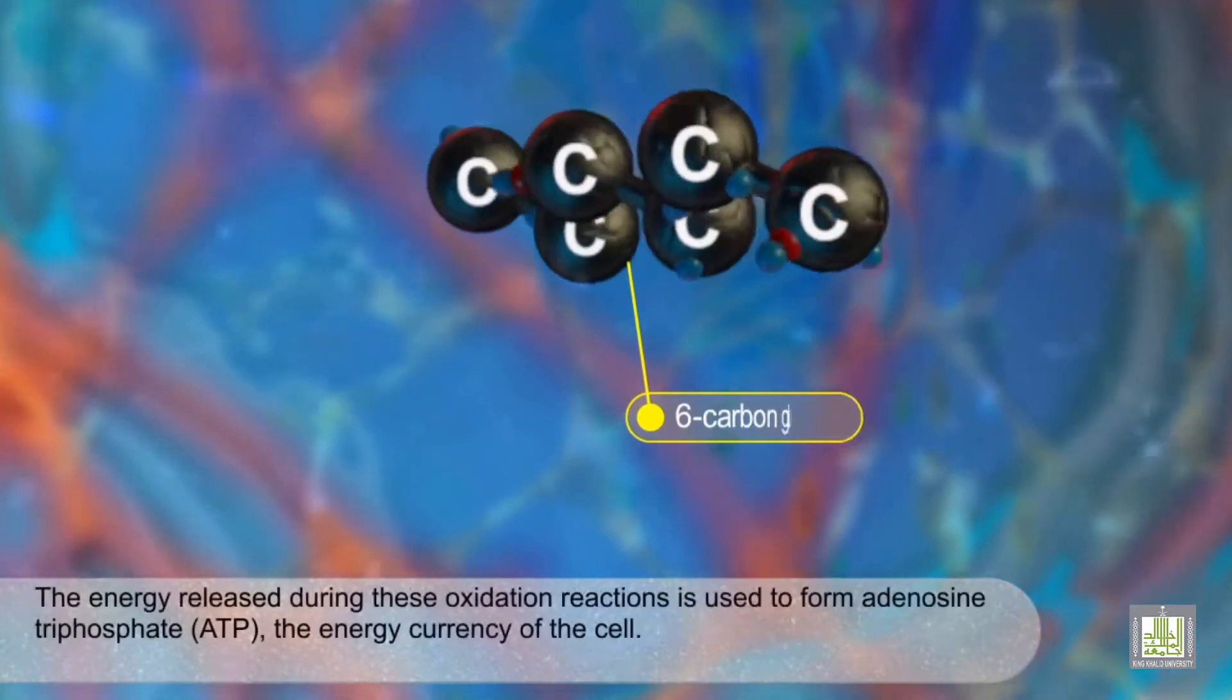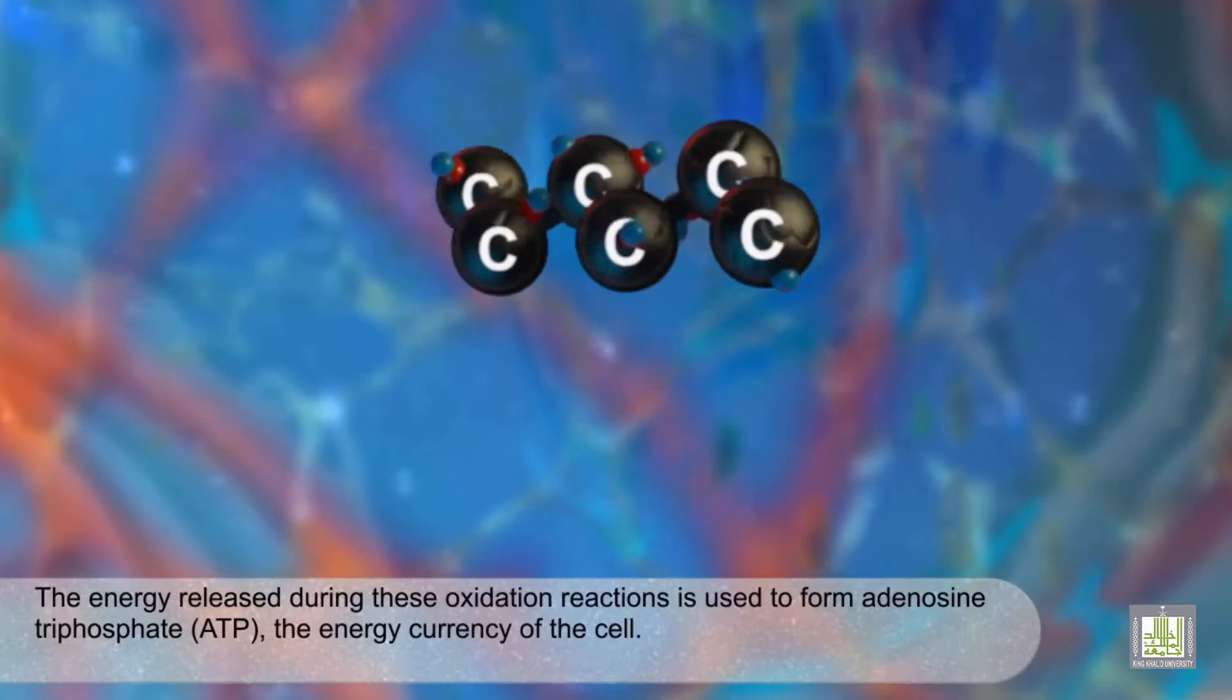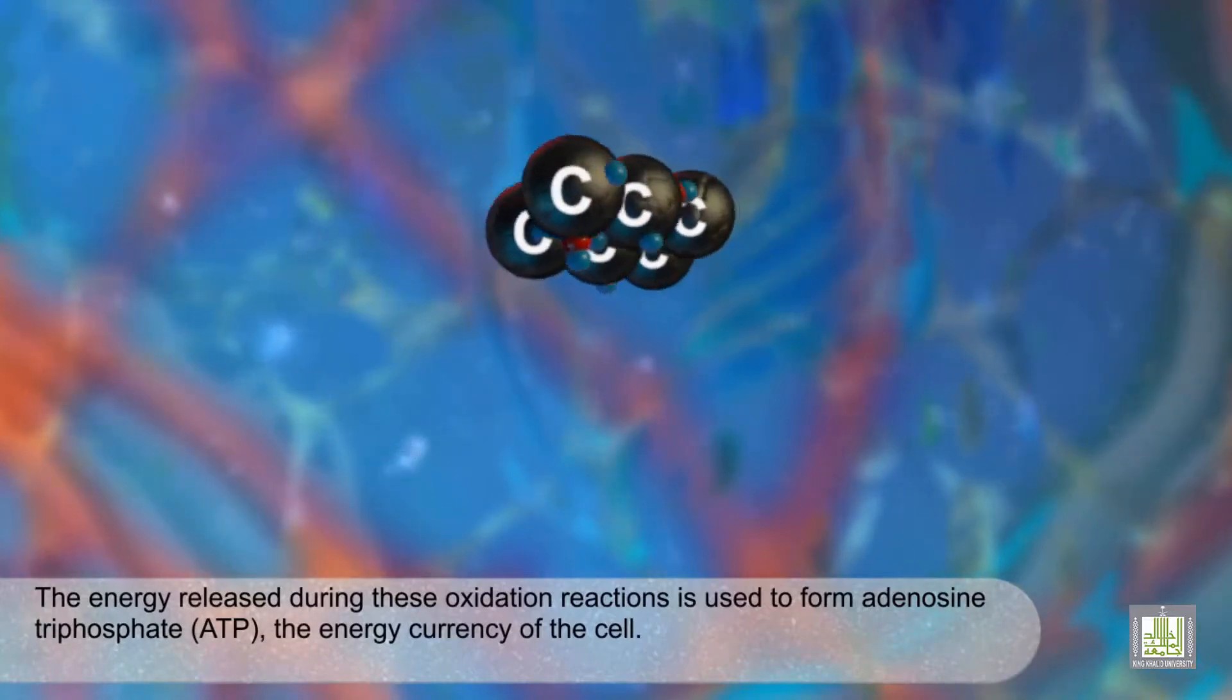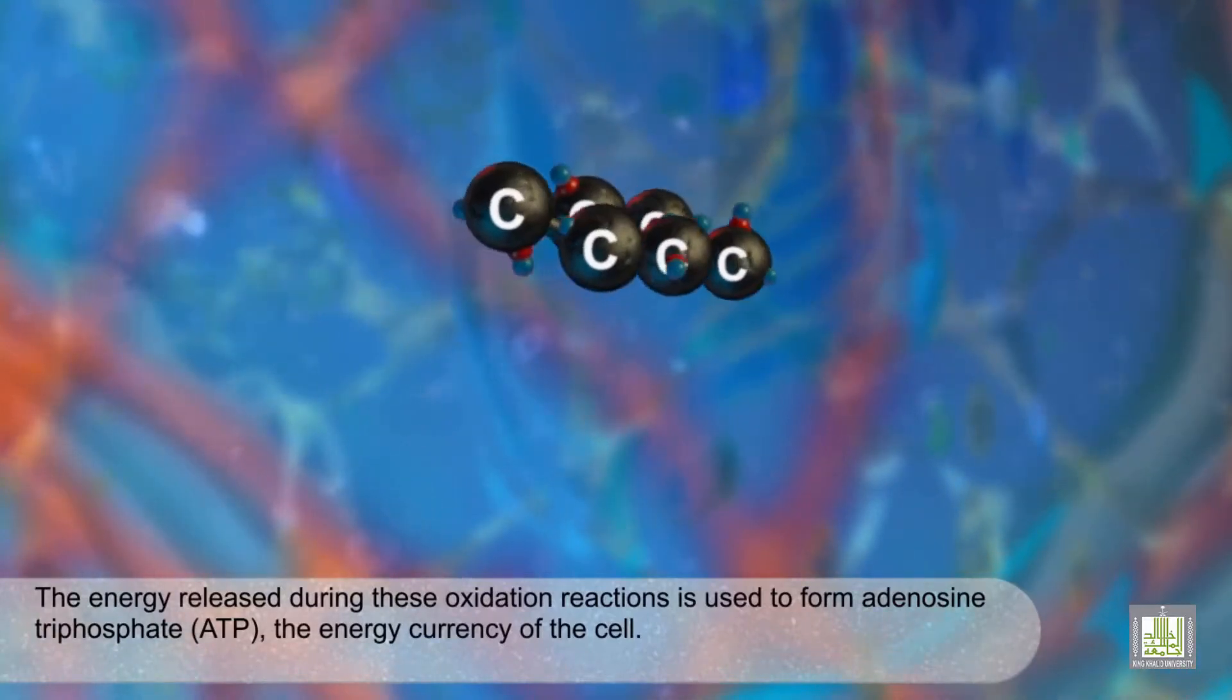The energy released during these oxidation reactions is used to form adenosine triphosphate, ATP, the energy currency of the cell.